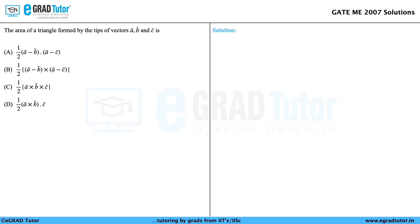The area of a triangle formed by the tips of vectors A, B and C is? Guys, this question is from Engineering Mathematics. Let us look at the solution.